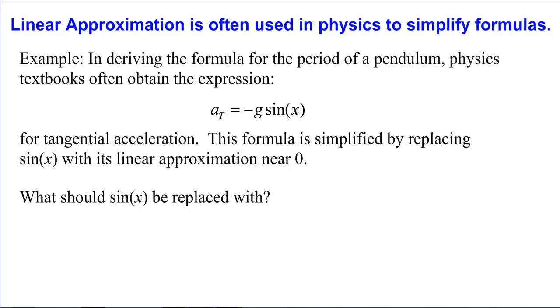An example of doing this where they decide that a line is a good enough polynomial approximation is in physics when they're calculating the formula for the period of a pendulum. They do the derivation and they get negative g times sine of x is what the formula should be for a tangential acceleration. This is hard to work with. They decide to replace sine of x with its linear approximation near zero.